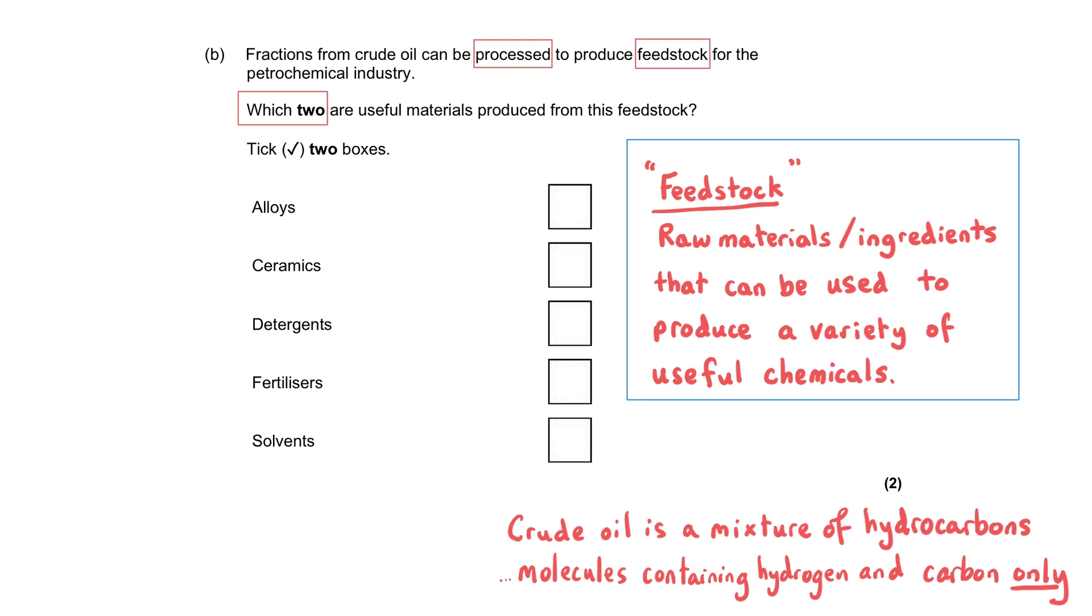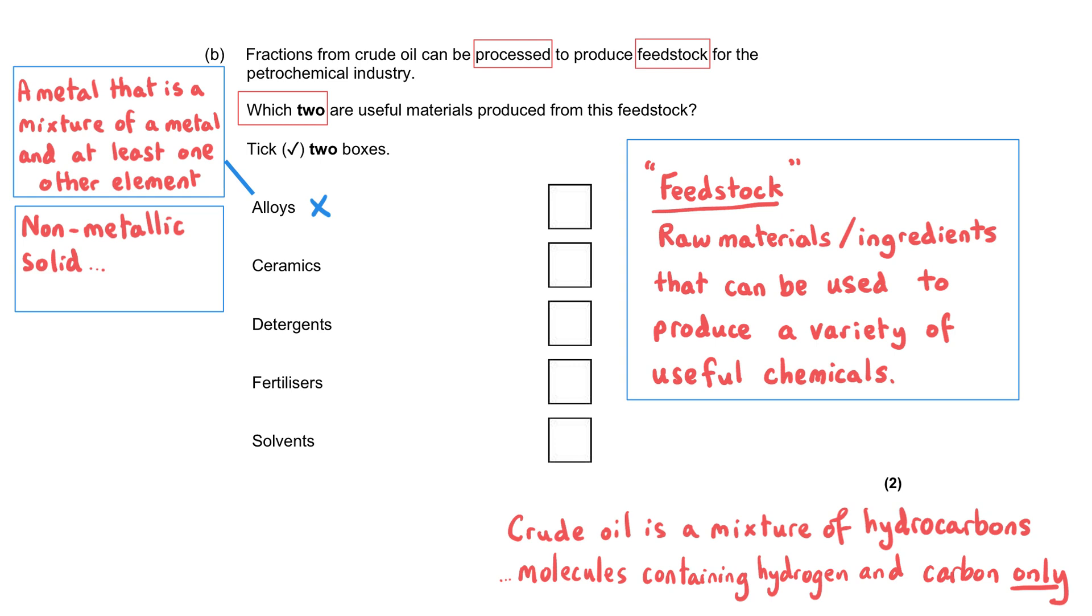And so, alloys, the first answer, is definitely wrong. Because alloys are made from metals with other substances, and that might not be metals. But we definitely need metals for it to be an alloy. And ceramics? Well, ceramics include things such as glass and clay and pottery.